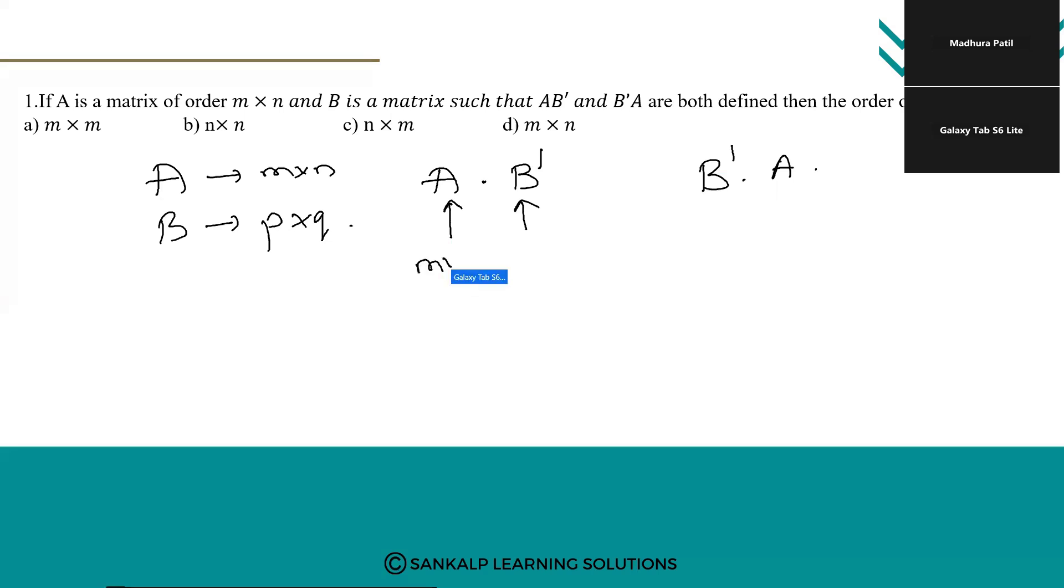Now here the order is n cross n and if B is P cross Q then B dash will be Q cross P. So by the rule we can see that n is equal to Q.